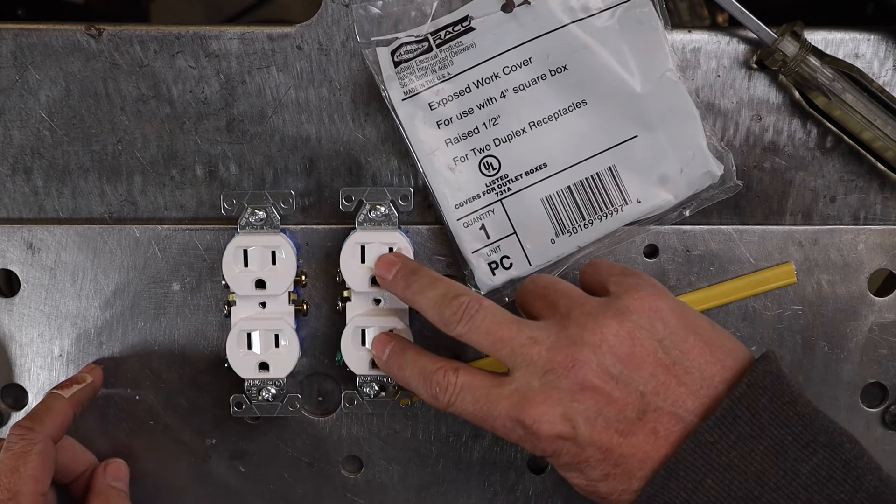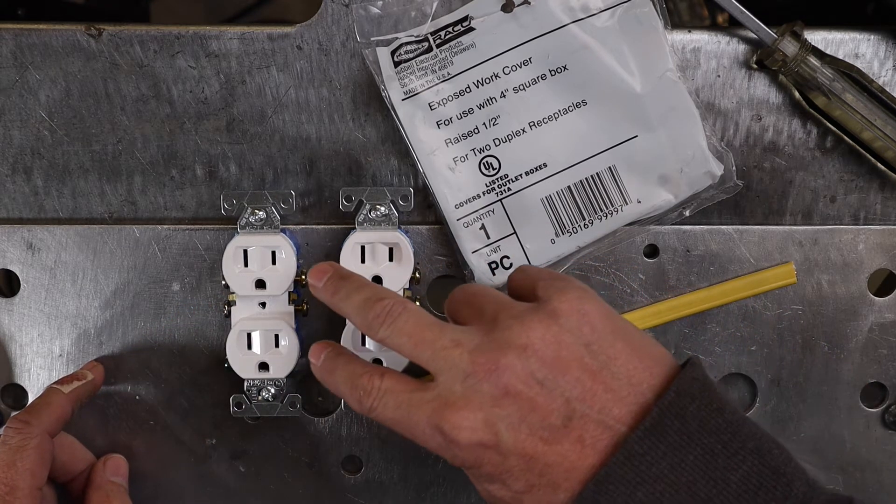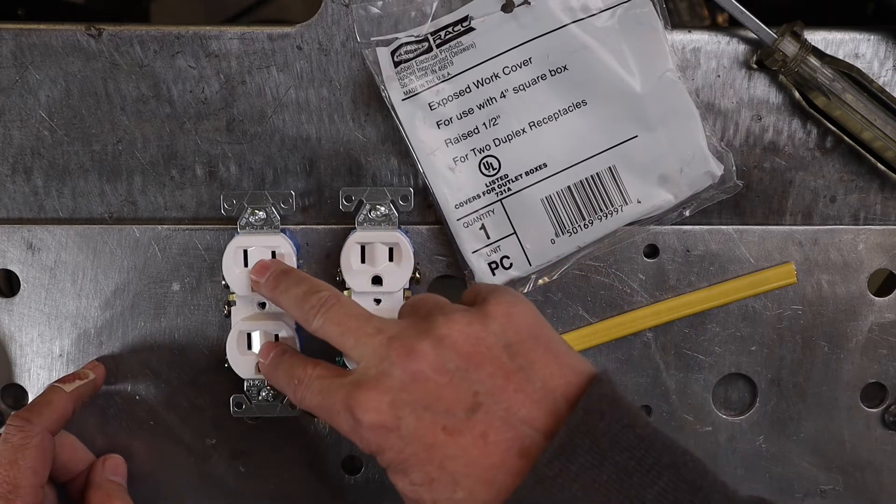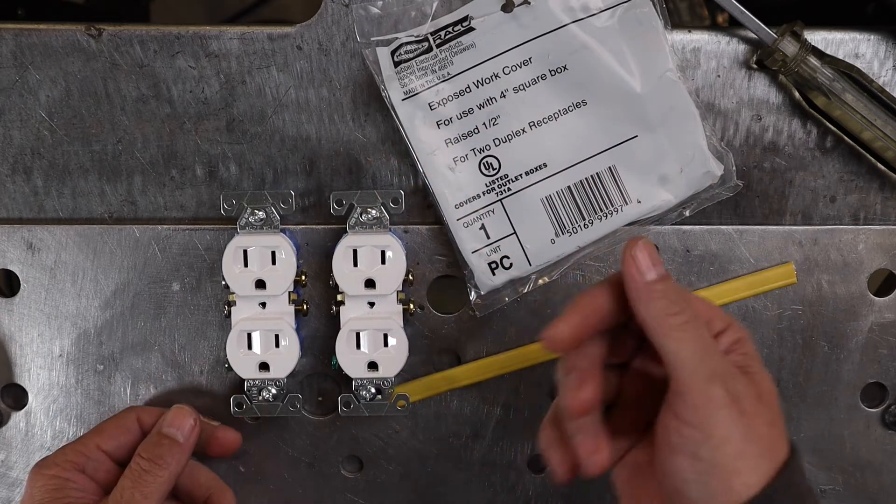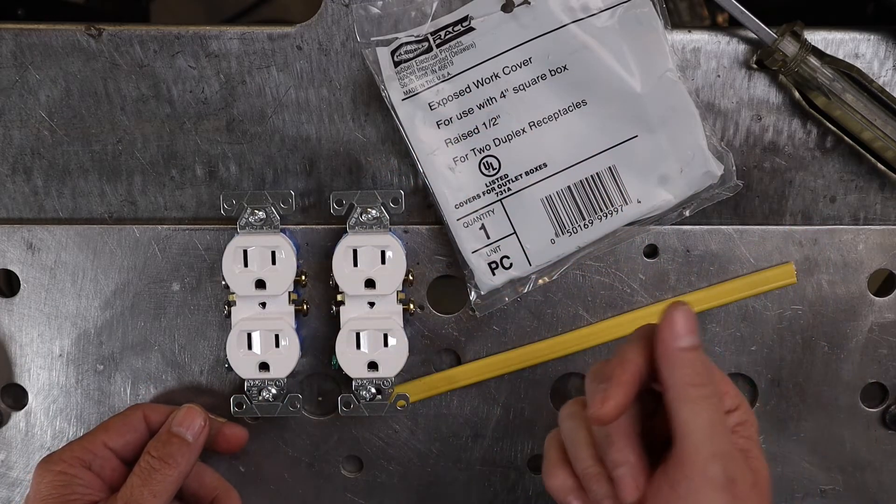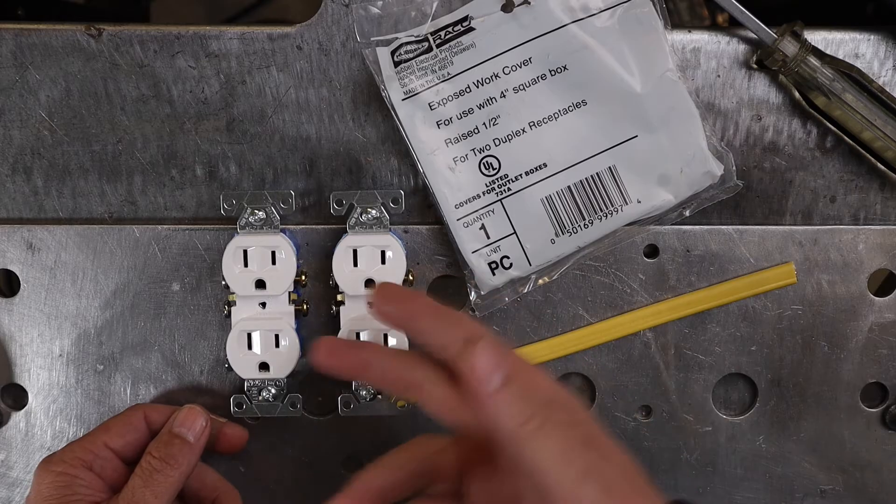So the power has to come through your first outlet, pass through it, and go to your second outlet. Some of the arguments I've heard or drawbacks of that is if you have an outlet fail, then they'll probably both fail depending on which one fails.